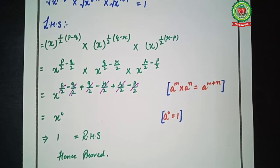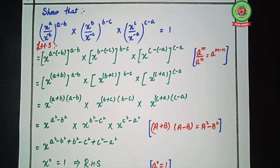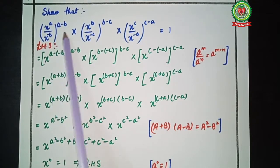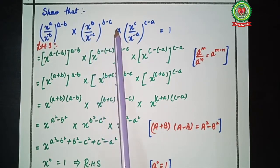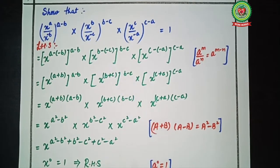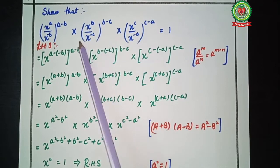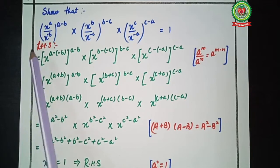Now let's move to the next example. Here again we have a statement in which we have to show that the left-hand side equals the right-hand side. Read the statement: show that x raised to power a upon x raised to power minus b, bracket a minus b, multiplied by x raised to power b upon x raised to power minus c, bracket b minus c, multiplied by x raised to power c upon x raised to power minus a, bracket c minus a, equals 1.